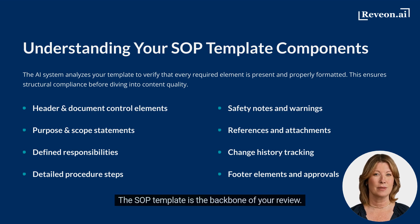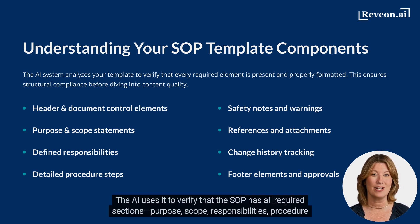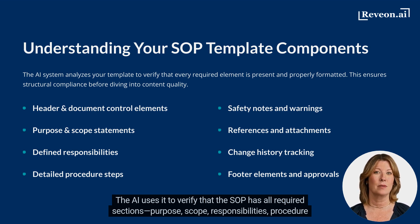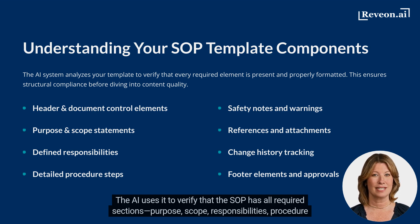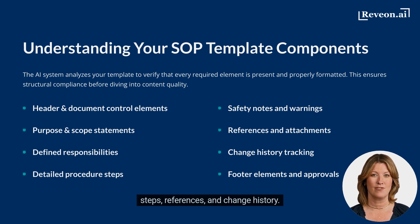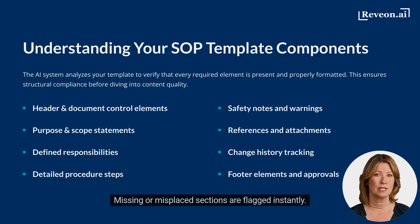The SOP template is the backbone of your review. The AI uses it to verify that the SOP has all required sections: purpose, scope, responsibilities, procedure steps, references, and change history. Missing or misplaced sections are flagged instantly.